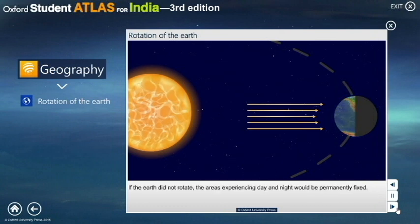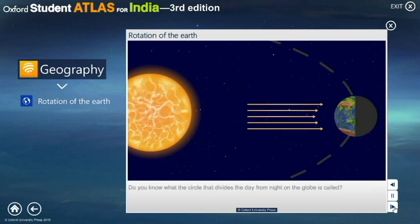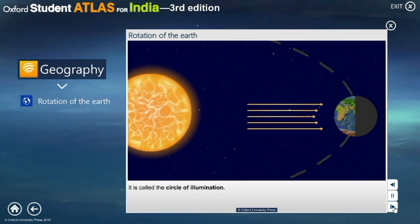If the Earth did not rotate, the areas experiencing day and night would be permanently fixed. Do you know what the circle that divides day from night on the globe is called? It is called the circle of illumination.